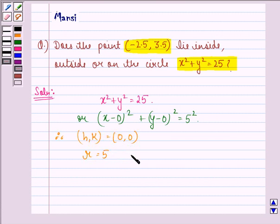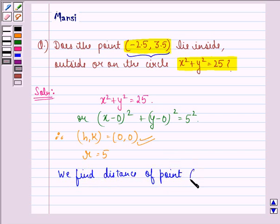From this, we can see that the circle has center at the point (0,0), that is the origin. So, now, what we do is we find distance of point (-2.5, 3.5) from the origin (0,0).